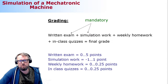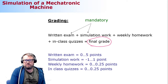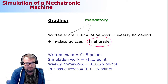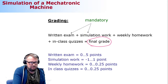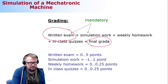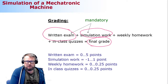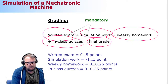Here is the equation showing how your final grade is computed. There are two mandatory items you must complete: the written exam and the simulation work. There are also supplementary tasks you may choose to do: weekly homework and in-class quizzes. The written exam is graded zero to five, simulation work minus one to one, weekly homework zero to 0.25, and in-class quizzes zero to 0.25.